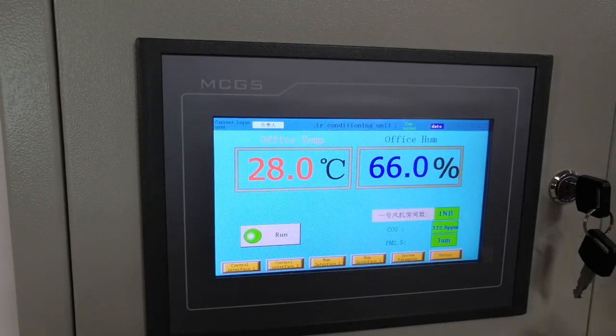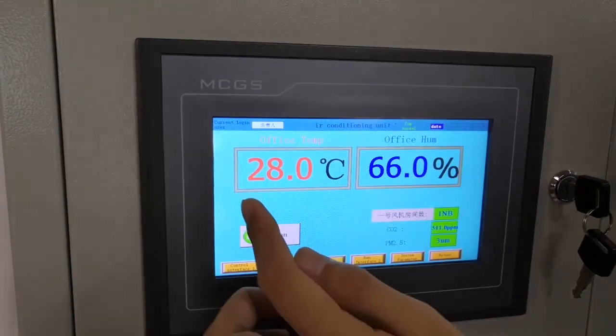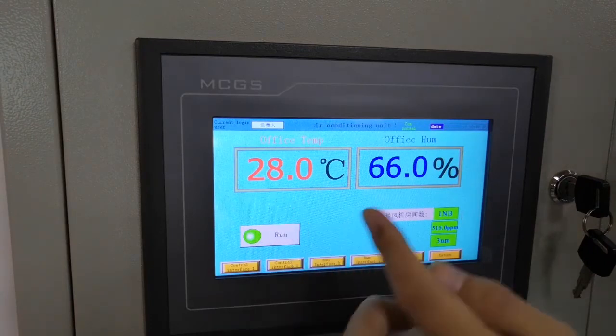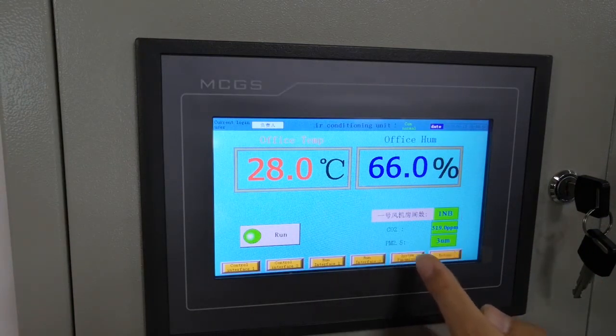We can also read the indoor air quality from this control panel. As you can see the office temperature and humidity and the CO2 and PM 2.5.